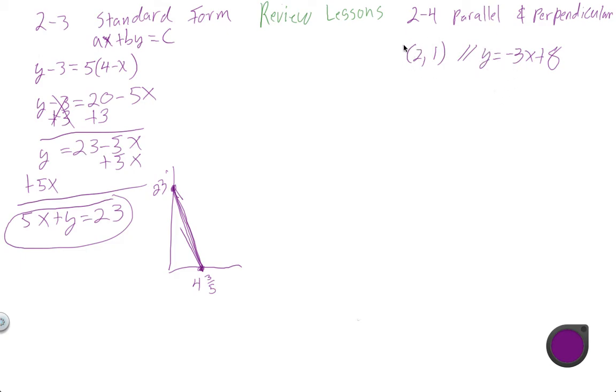So what we want to do with this is, first, we want to find a parallel line that passes through the point 2-1. What we know is if it's parallel, it has to have the same slope. So we're going to say Y equals negative 3X plus some B. We're just looking for a different Y-intercept. And then if we plug this point in, 1 is Y, and 2 is X, so negative 3 times 2 plus B.